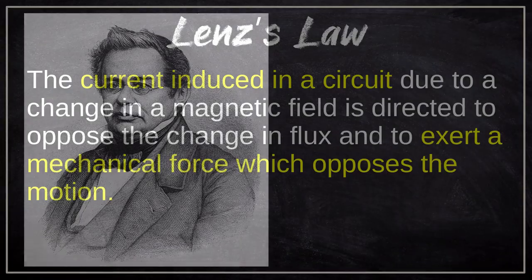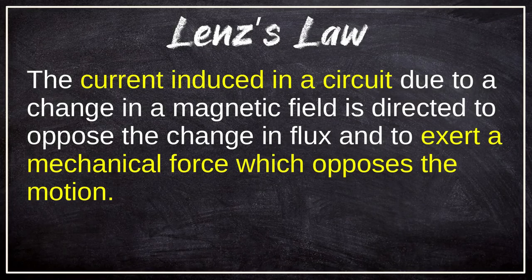He came up with a statement that basically says that an induced electrical current flows in a direction so that the current opposes the change that induced it in the first place. There's a very simple demonstration that we can do with a strong magnet and a non-magnetic tube. Let's watch.